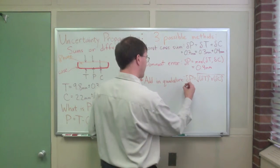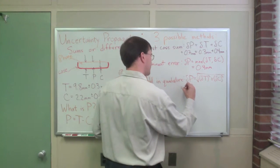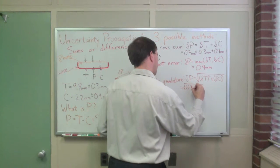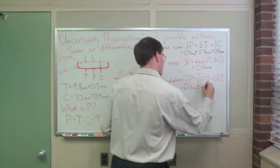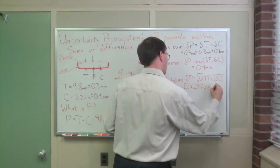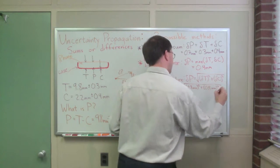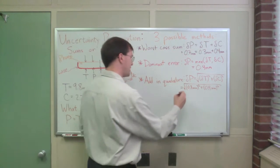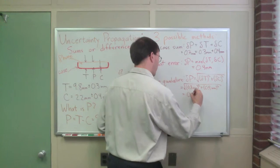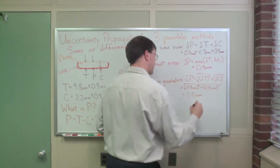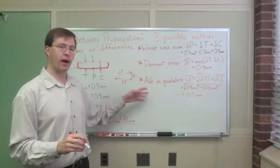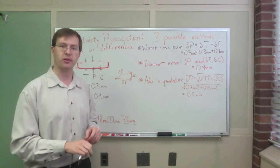So adding in quadrature for us, that means my answer here is going to be the square root of 0.3 millimeters squared plus 0.4 millimeters squared. And I obviously chose these numbers on purpose to make this easy because that is exactly 0.5 millimeters. Adding in quadrature is very much the best way to combine uncertainties if you have independent random errors like this. And it's the best way to do it.